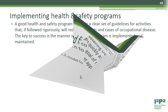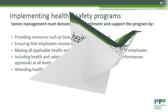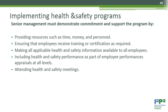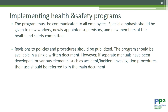A good health and safety program provides a clear set of guidelines that, if followed rigorously, will reduce accidents and causes of occupational disease. The key to success is the manner in which the program is implemented and maintained. Senior management must demonstrate commitment by providing resources such as time, money, and personnel; ensuring employees receive training or certification; making all applicable health and safety information available to all employees; including health and safety performance in employee appraisals at all levels; and attending health and safety meetings.